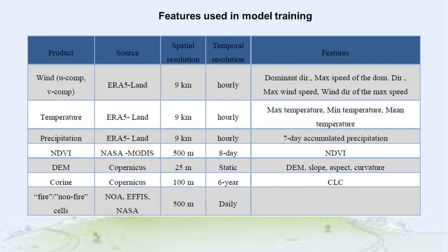In this table, we can view the list of the features extracted that feed the model. Those features were chosen based on previous studies that have depicted the most influential parameters for fire ignition. The set of input features includes meteorological, satellite remote sensing, topography and land use data.